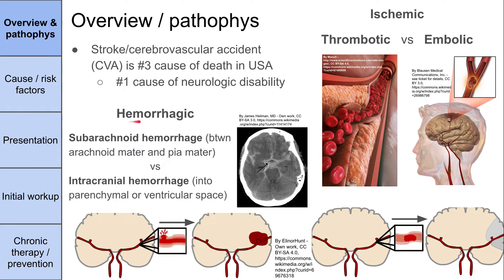The next big category of strokes is hemorrhagic strokes. Hemorrhagic means bleeding — this is a bleed into the brain. When a blood vessel breaks or ruptures, you have a leak of blood into the brain tissue. If that leak ends up between the subarachnoid mater and the pia mater, it's a subarachnoid hemorrhage. If the leak is into the parenchymal or ventricular space, it's an intracranial hemorrhage. On a CT scan, the blood shows up more white than surrounding tissue, visible inside the ventricles and sulci.